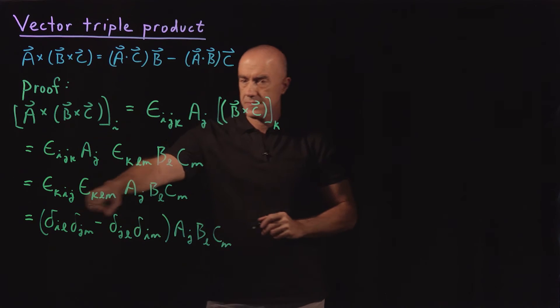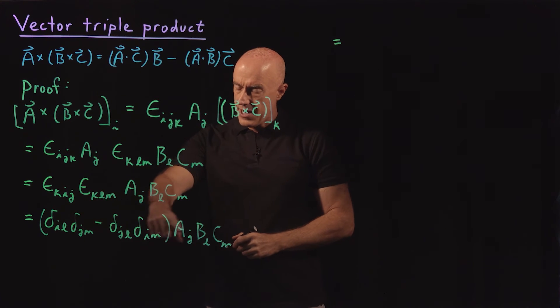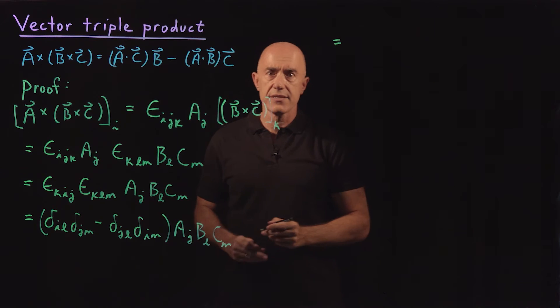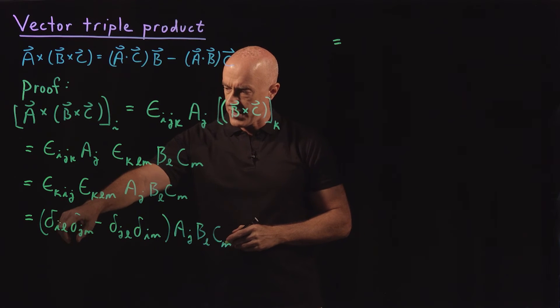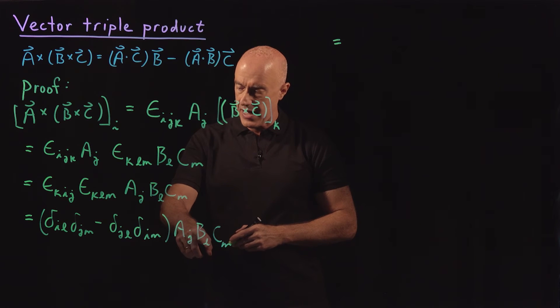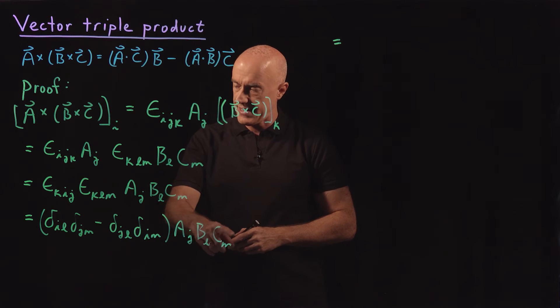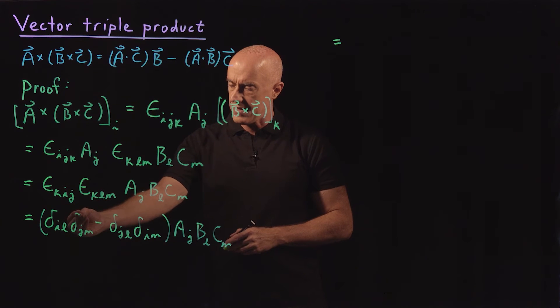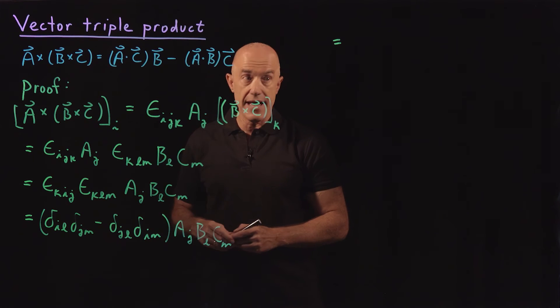Okay, I'll continue up here. What do we do next? Well we have a delta_{i,l} and that can contract the B_l. And we have a delta_{j,m} and that can contract the C_m. So I'm going to keep the i and j and then contract the l and m.